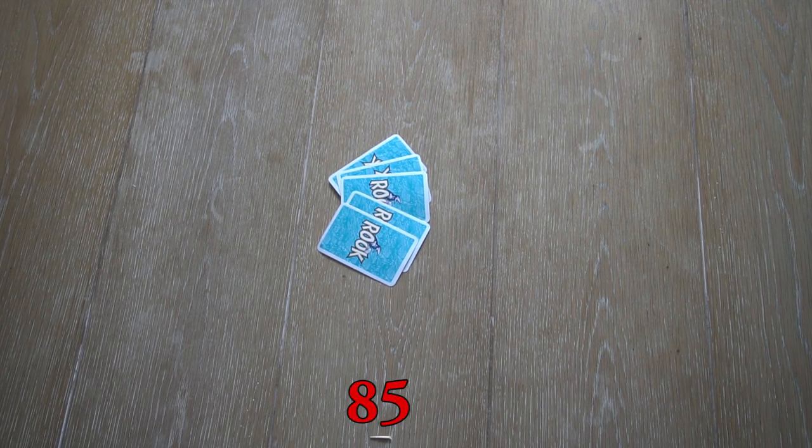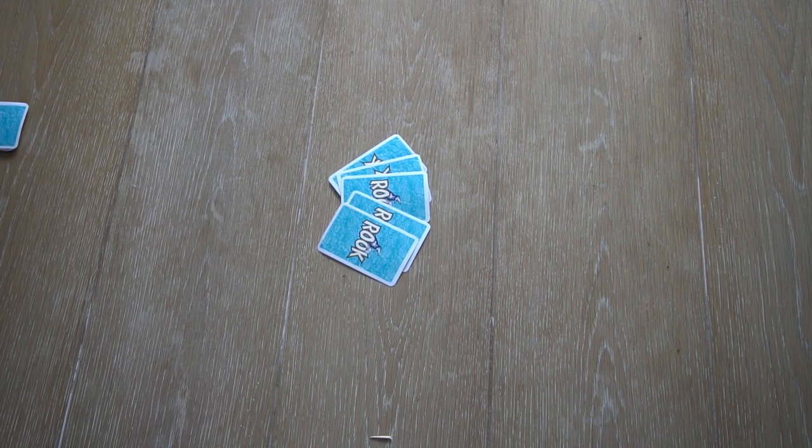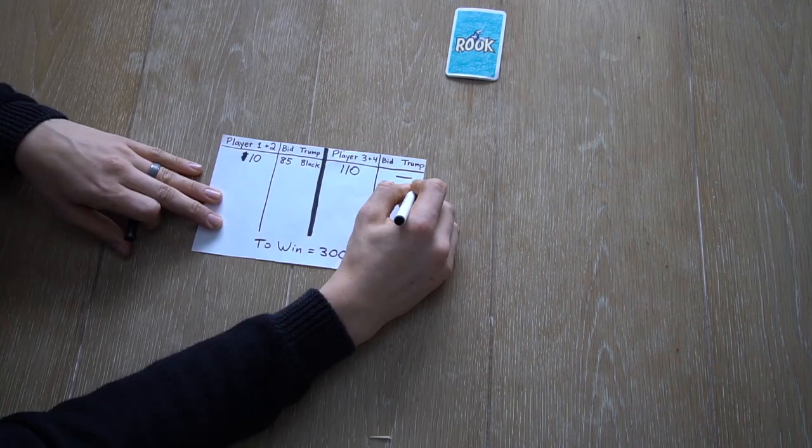This time, player 3 won the bid with 85. He gets the nest, then discards 5 cards for the new nest and picks green for trump.